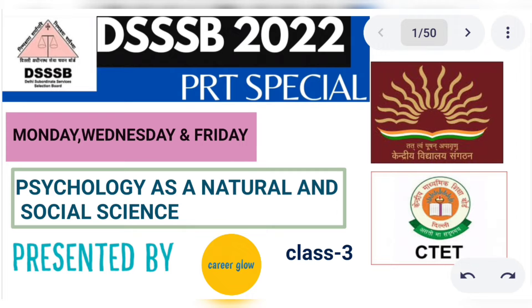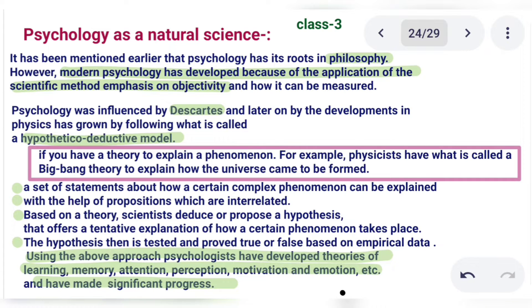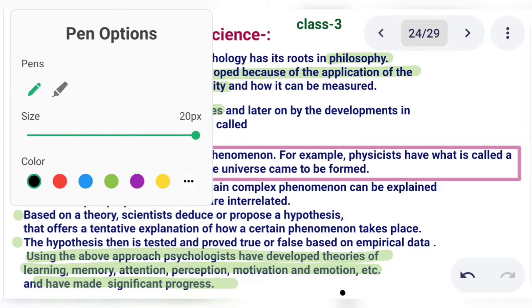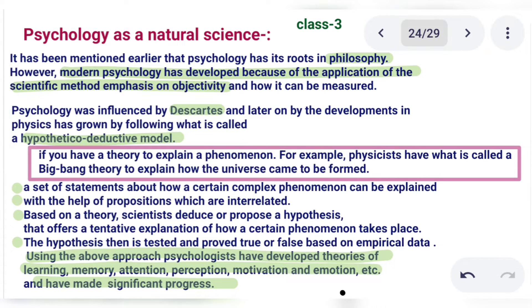This is your third class presented to you by CareerGlow. We have been playing a series on psychology with questions asked on Monday, Wednesday, and Friday. So the next topic is psychology as a natural science.